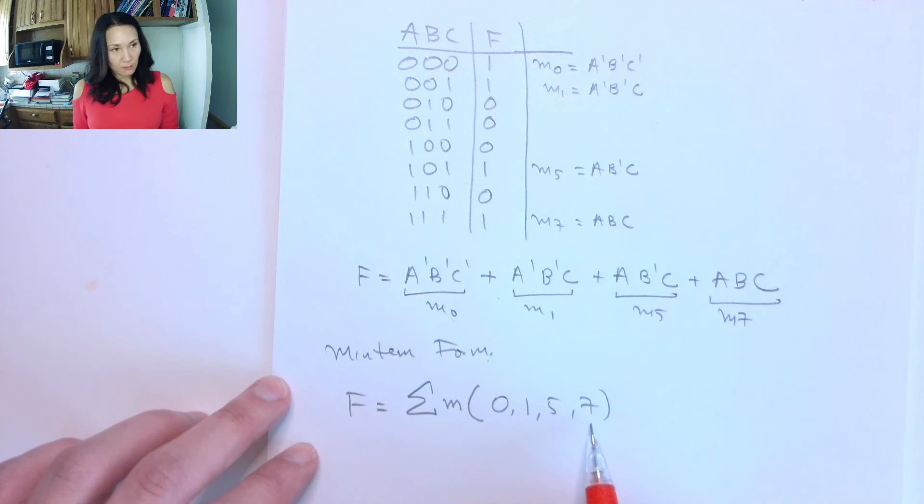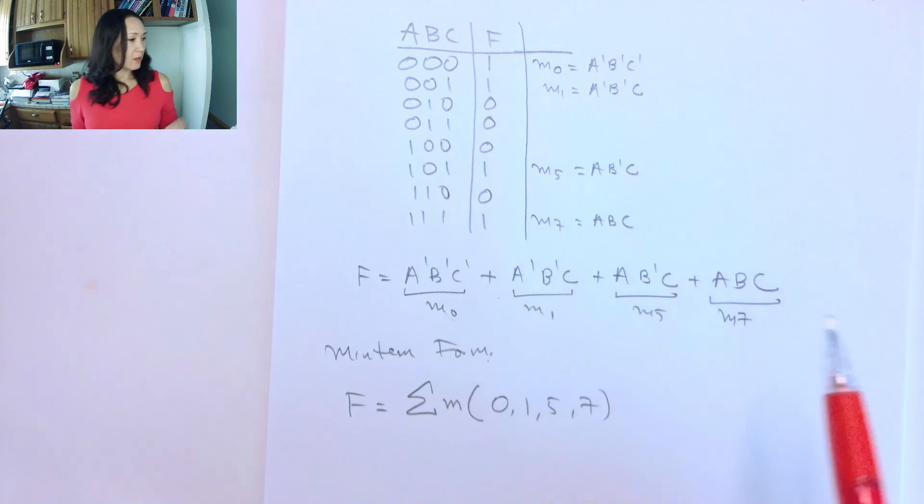So this is min-term form. Actually doing the min-term expansion looks like this with all the literals written down. Let me know if you have any questions about that.